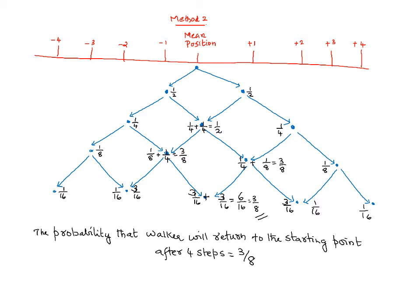So by computing these probabilities, I find that to come back to the mean position, we have a total probability of 3 by 16 plus 3 by 16, that is 3 by 8. Hence the answer.